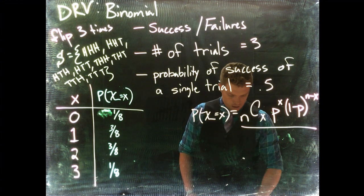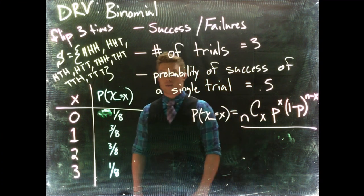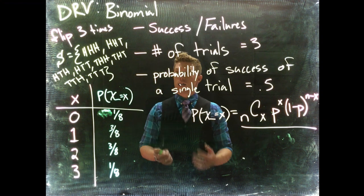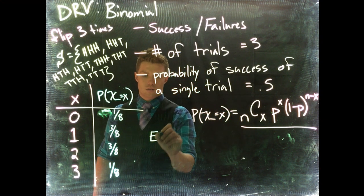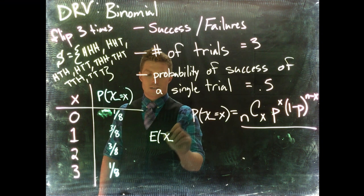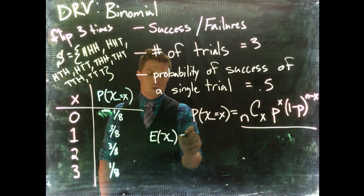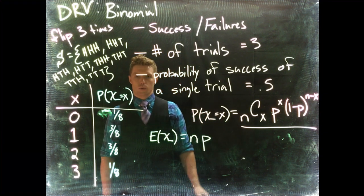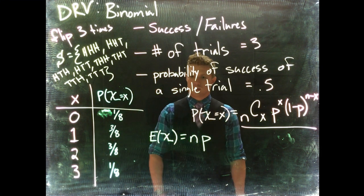Now along with that, there's also a shortcut for how to determine the expected value and the variance within a binomial situation. So if we want to know the expected value, so the expected value of x in a binomial situation, remember only true for binomial. You take the number of trials multiplied by your probability. That'll give you your expected value. That is way faster than going through all the columns.